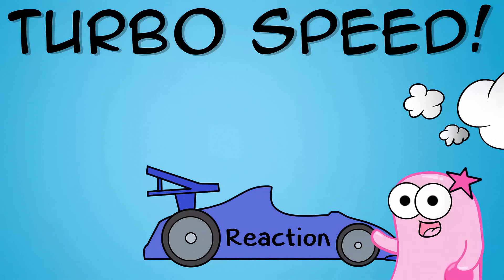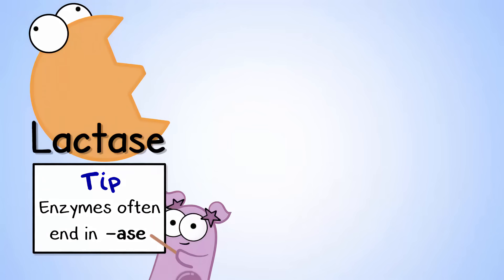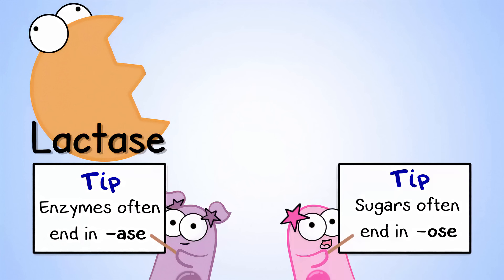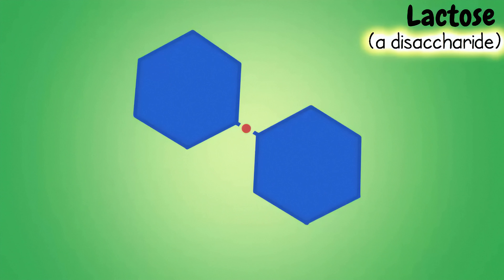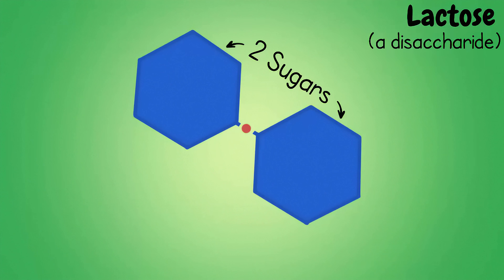Let me give you a great real-life example: the enzyme lactase. Another really cool thing about enzymes is that they often end in -ase, like lactase. Many sugars, on the other hand, end in -ose. Lactose is an example of a sugar — it's a disaccharide, meaning it contains two sugar molecules bound together.